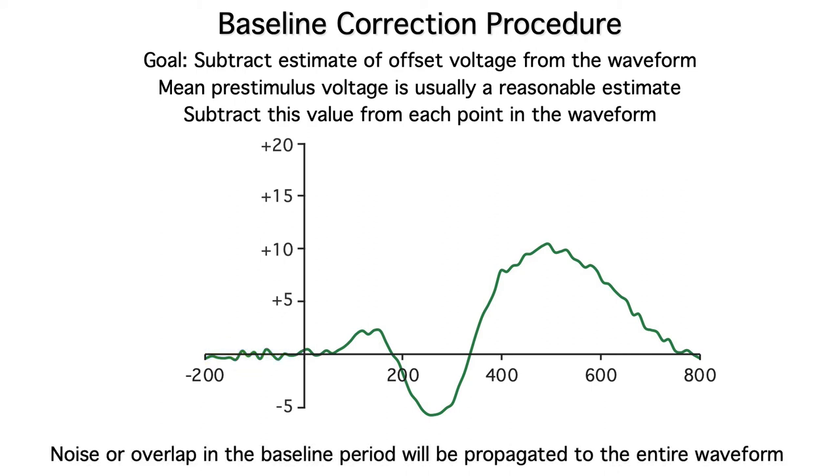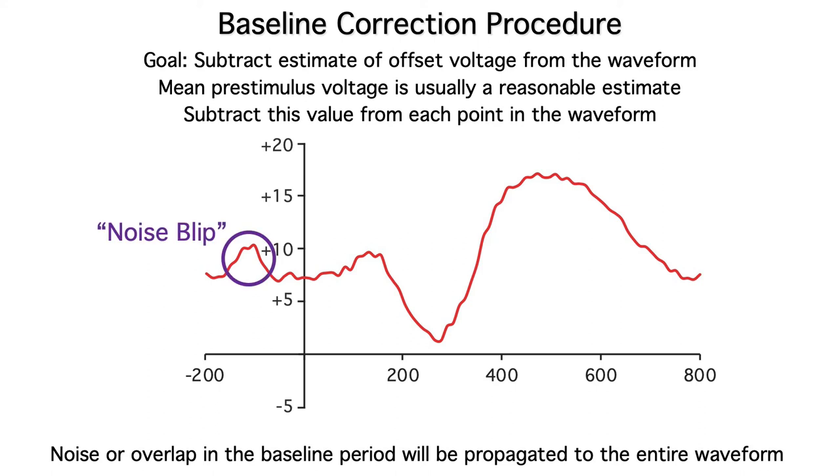Well, here's the problem. Any noise or overlapping activity from the previous stimuli will distort the pre-stimulus voltage, and the baseline correction procedure will cause that distortion to propagate to the entire ERP waveform. Here's the same ERP waveform as before, but now there's a little noise blip in the pre-trial interval. Just a little random noise deflection. After all, this is single-trial EEG data, so there's all kinds of noise.